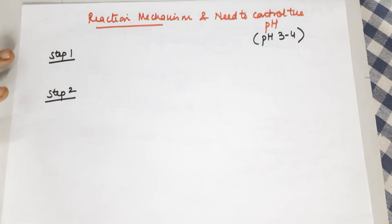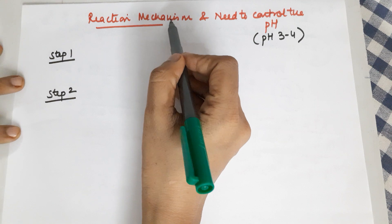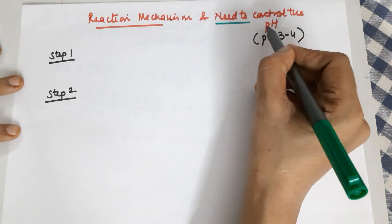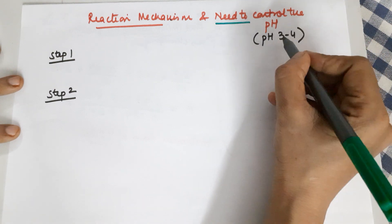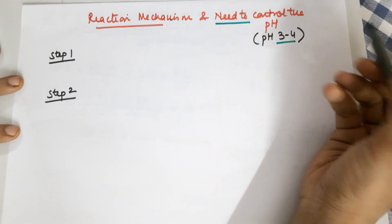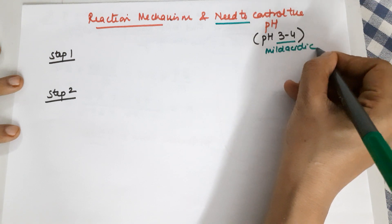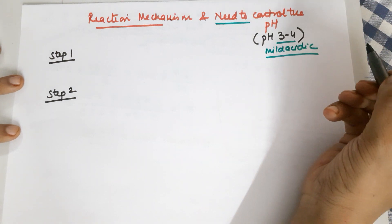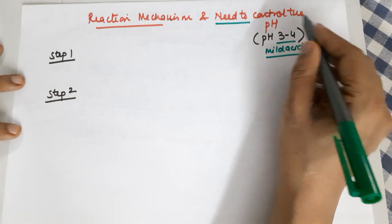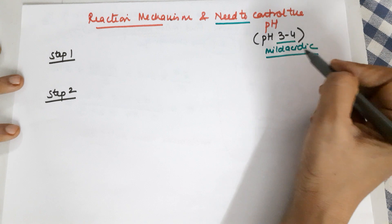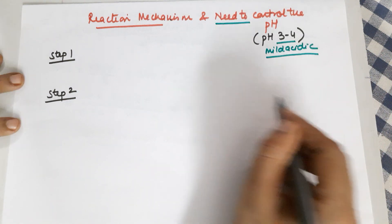Before moving on to reaction examples, we first need to do the reaction mechanism, because you should understand the need for pH control required in this reaction. The pH has to be between 3 to 4 — that is, you require a mild acidic medium. It can neither be highly acidic nor basic. Why we require this pH will be clear from the mechanism.